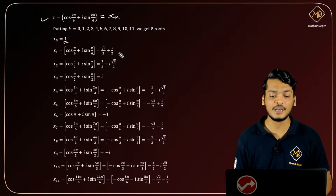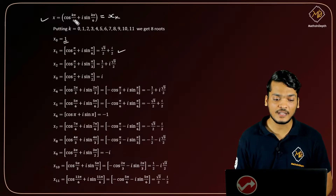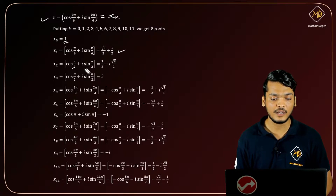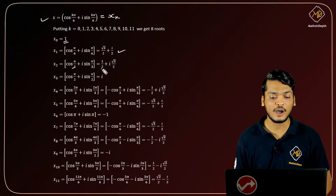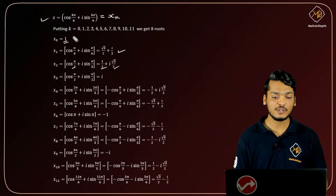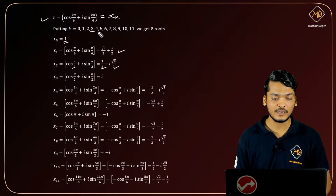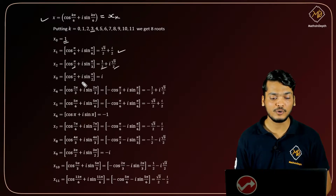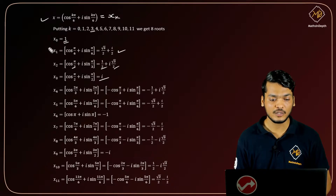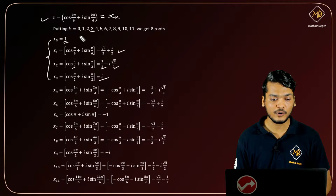For k = 2: the 2s cancel giving π/3, so the result is cos(π/3) + i·sin(π/3) = 1/2 + i·(√3/2). For k = 3: we get cos(π/2) + i·sin(π/2), where cos(π/2) = 0 and sin(π/2) = 1, giving i. So those are the first 4 roots.